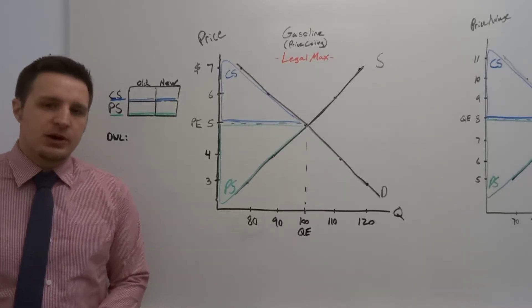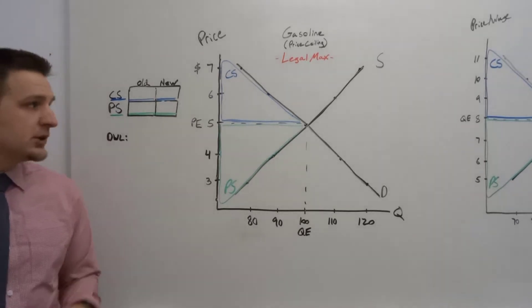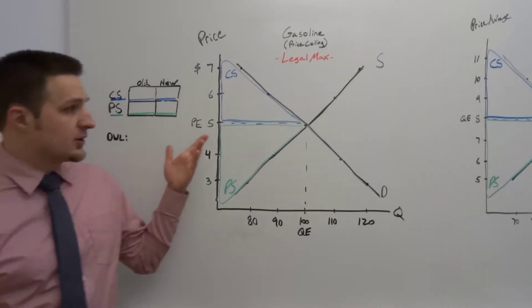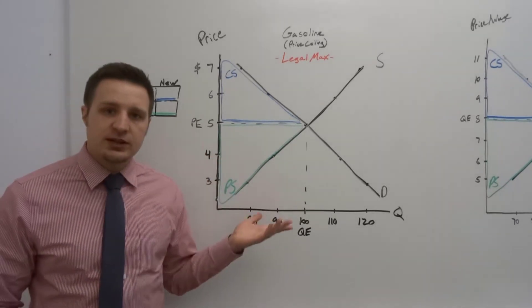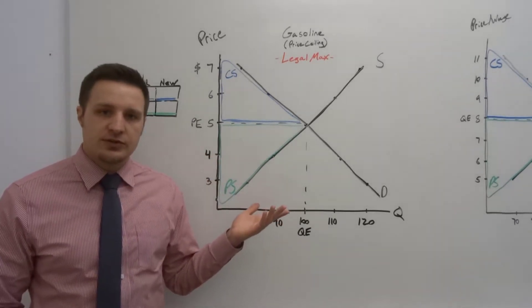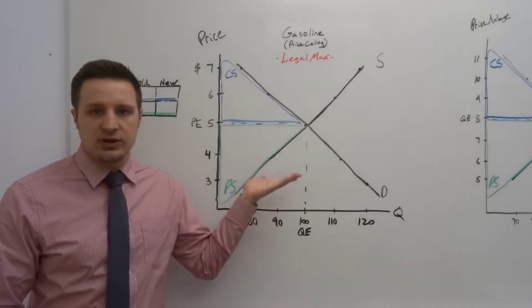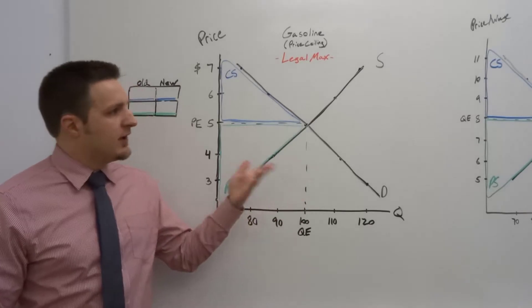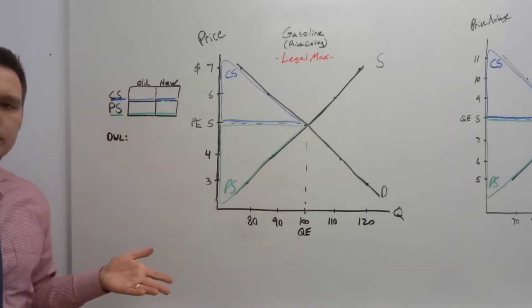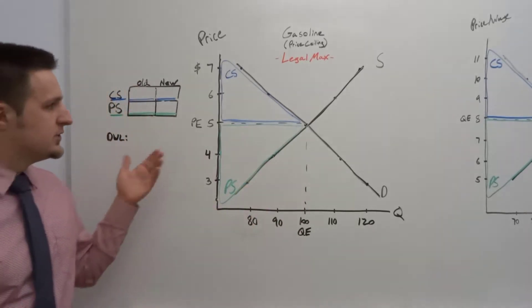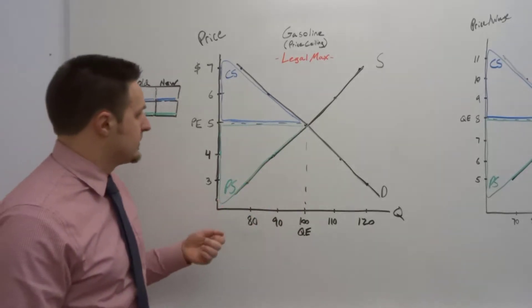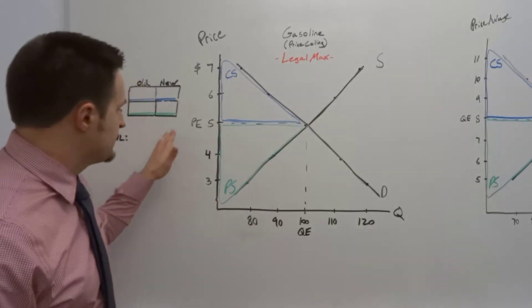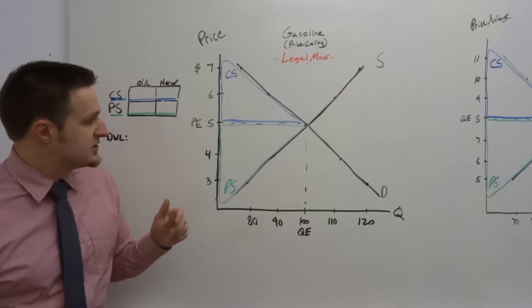Hello everyone. Today we're going to talk about price controls. The first one we're going to start with is a price ceiling, which is an artificial maximum price. Followed by a price floor, which is an artificial minimum price. Let's begin with the price ceiling.